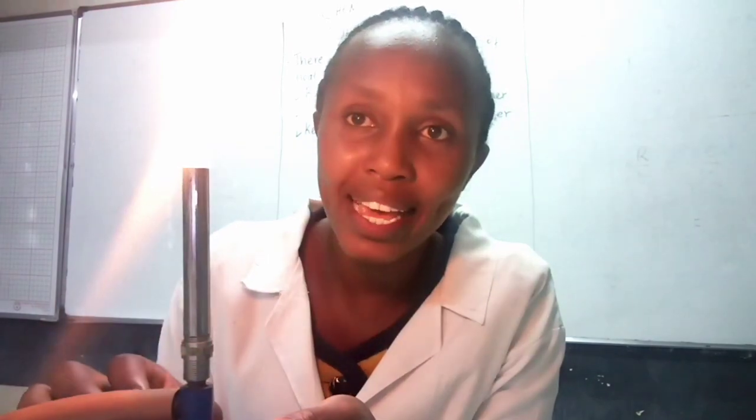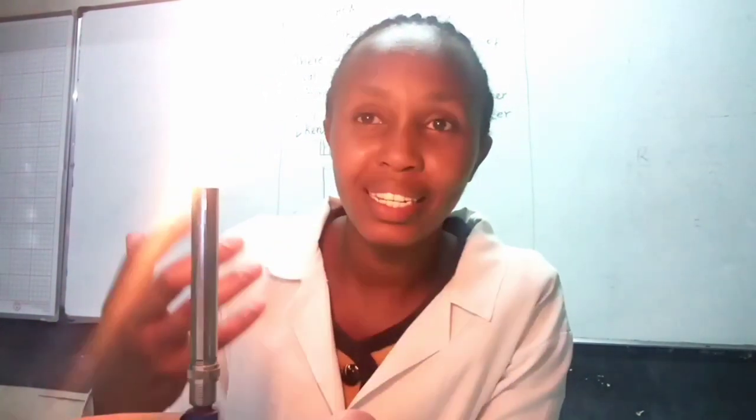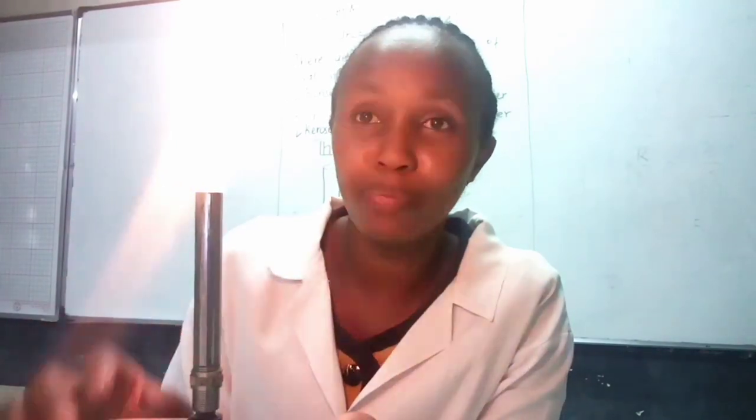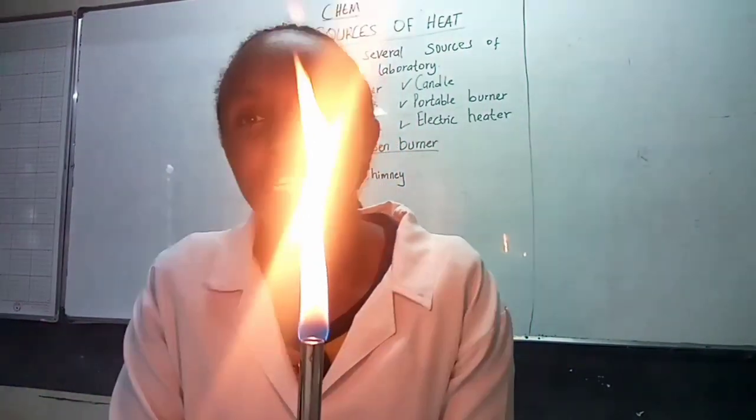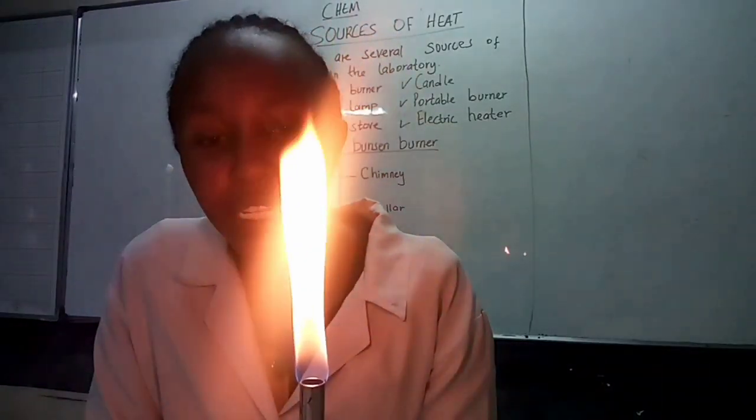There are two flames. The first is the luminous flame, which is bright yellow in color. Let me put it on. The first flame is produced when you completely close the air hole — you can see the flame is already giving some light. This flame is called the luminous flame.